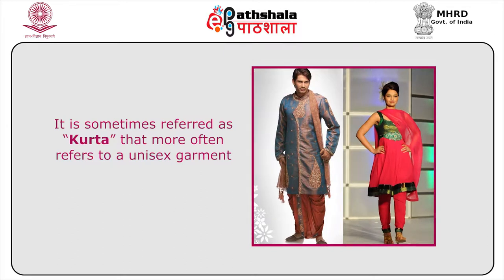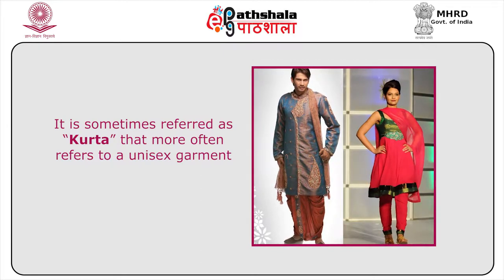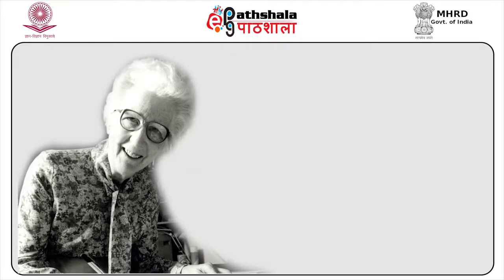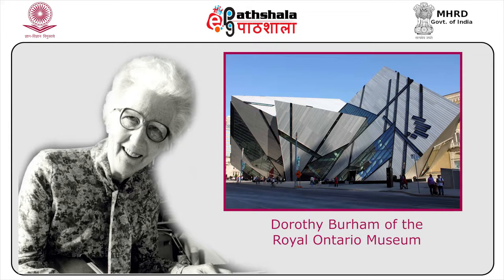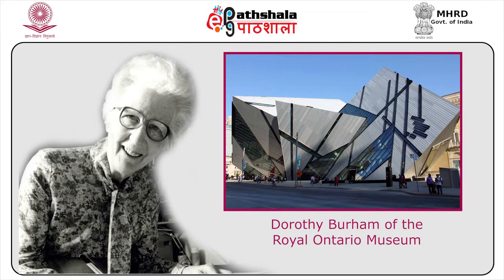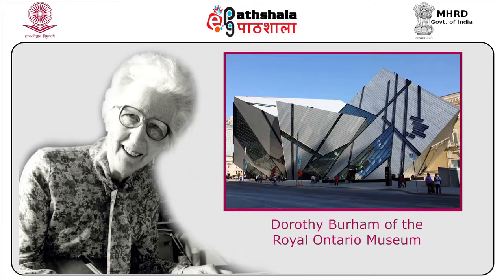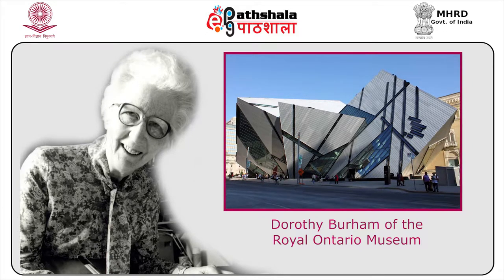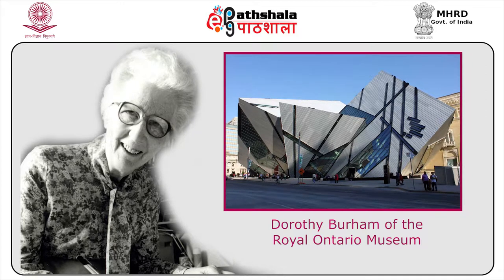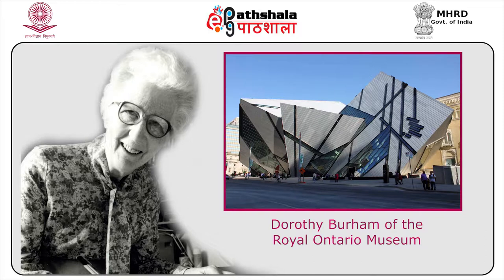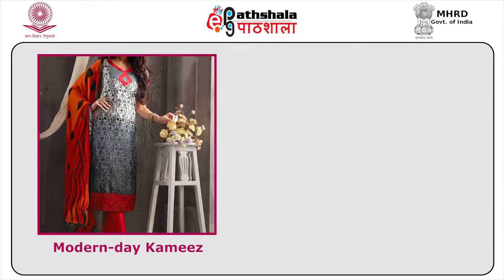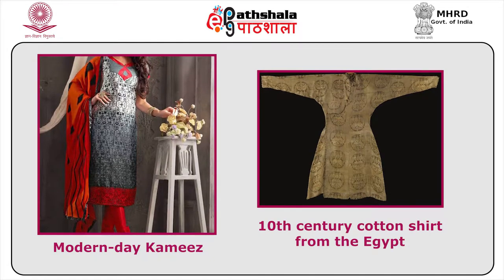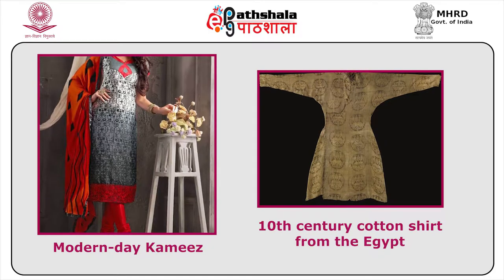It is sometimes referred to as kurta, which more often refers to a unisex garment. The description given by Dorothy Burnham of the Royal Ontario Museum refers to kameez as a seamless shirt woven in one piece on wrap-weaved looms, suspended in early Roman times by cloth woven on vertical looms. The modern-day kameez has a very close resemblance to the 10th-century cotton shirt recovered from the Egyptian desert.